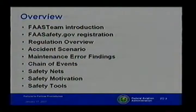We're going to talk about failure to follow procedures, the causal factors of failure to follow procedures, some of the maintenance errors that we have, and how you can get registered at www.faasafety.gov. The overview is going to be the FAST Team introduction, registration, how to do that, regulation overview, an accident scenario from the NTSB, maintenance error findings, how the chain of events affects everything, some of the safety nets you can use, safety motivation, and the safety tools we're going to be presenting.